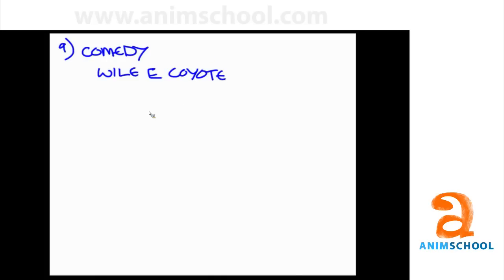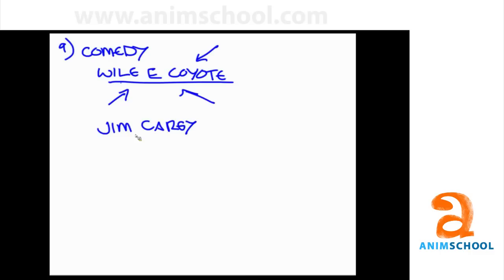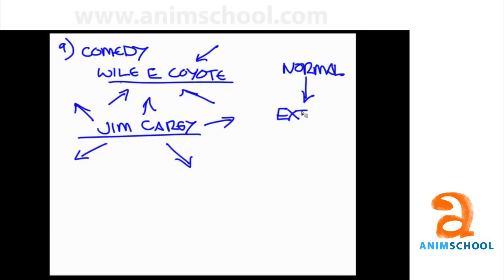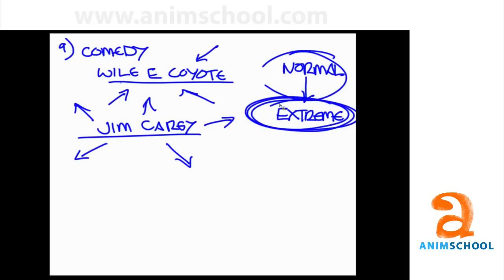Comedy is drama heightened. You'll have one of two situations: either an unusual person in a normal situation, or a normal person in an unusual circumstance. Wile E. Coyote is actually the normal person in an unusual circumstance — he adheres to real-world gravity and getting hurt, even though he's a cartoon. The comedy comes not from him being extreme, but from all the extreme things happening to him. Jim Carrey, on the other hand, is the eccentric guy in a regular situation. If you're going for comedy, figure out what needs to be pushed to the nth degree and push it — that's how you get the funny.